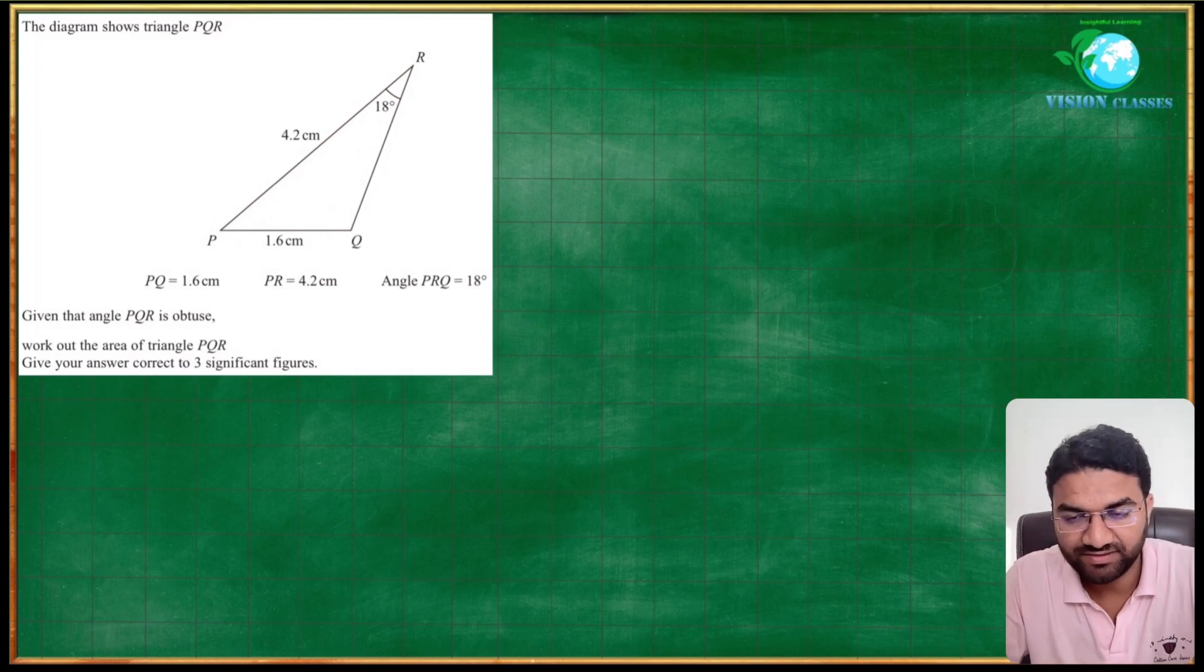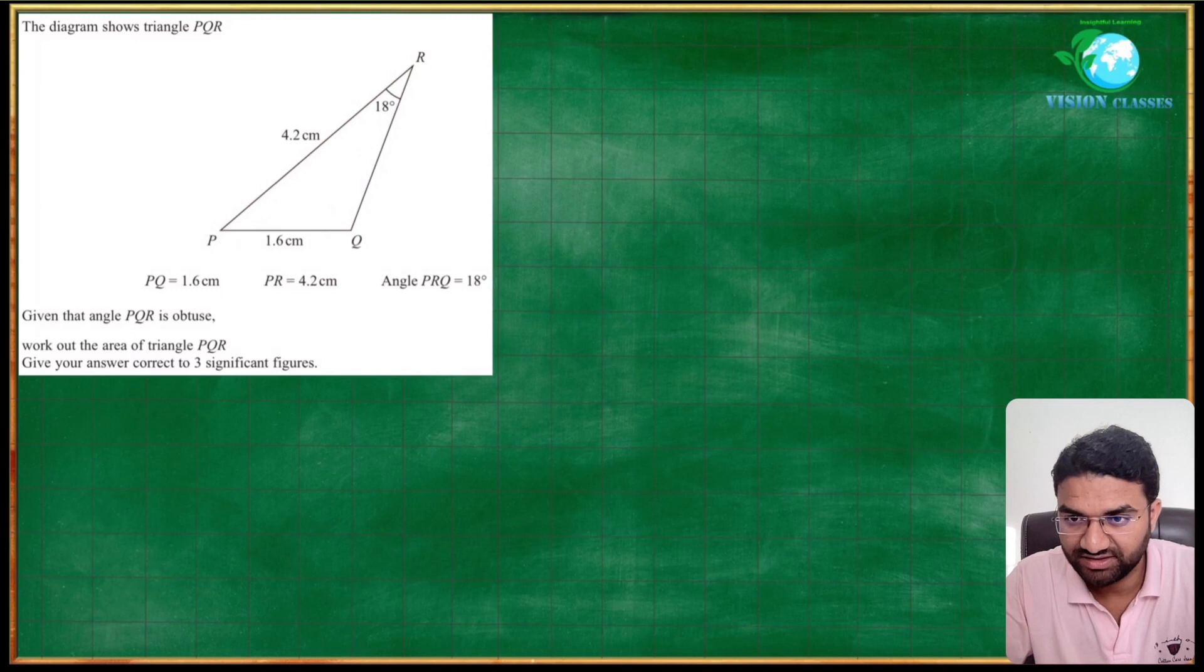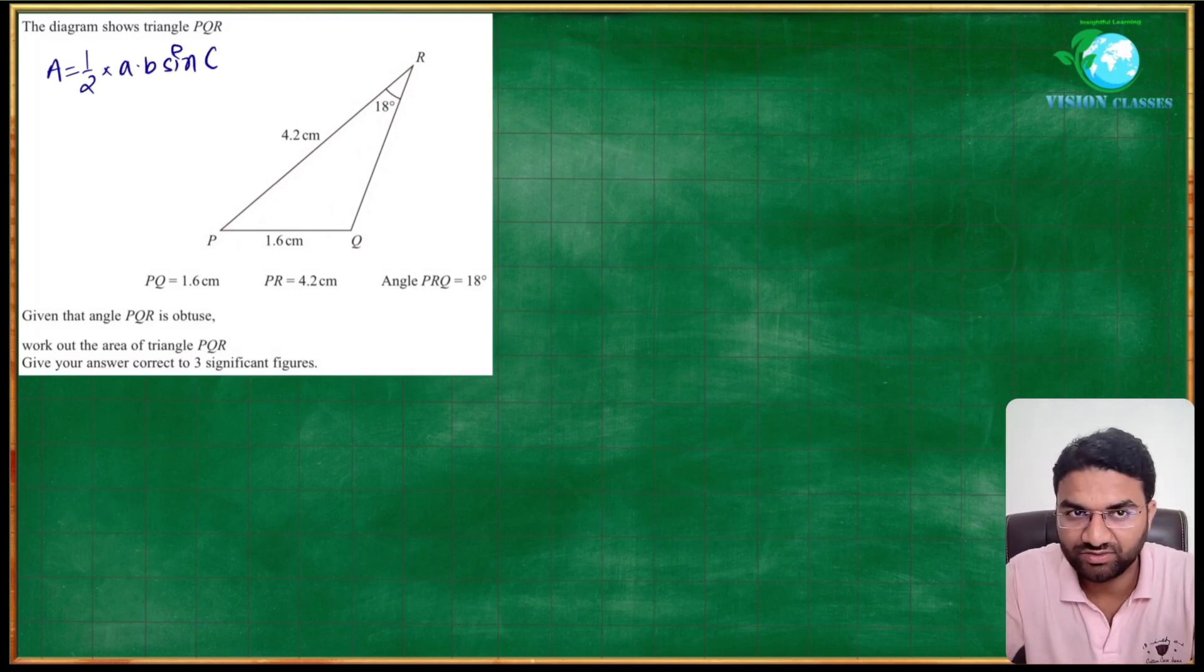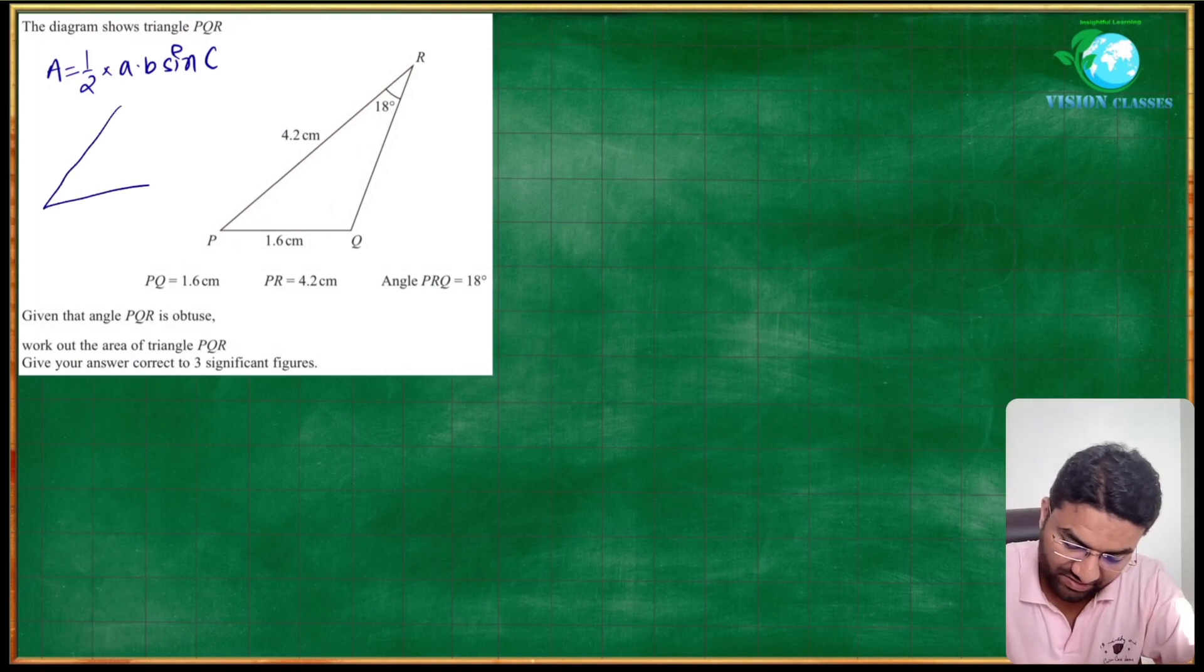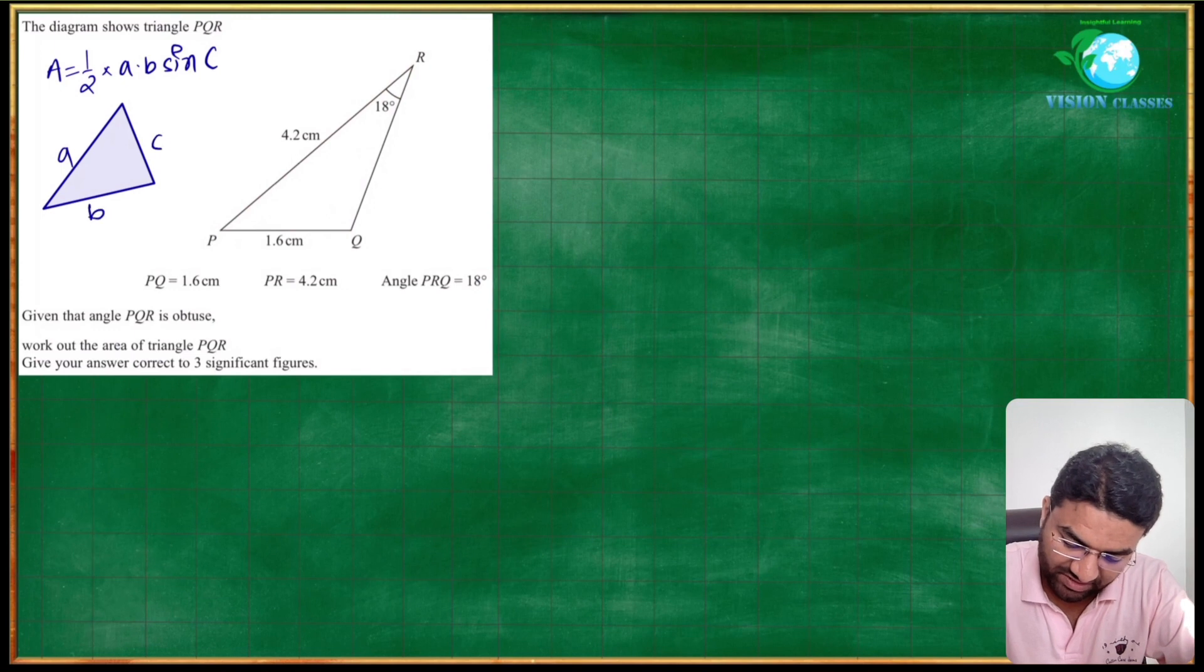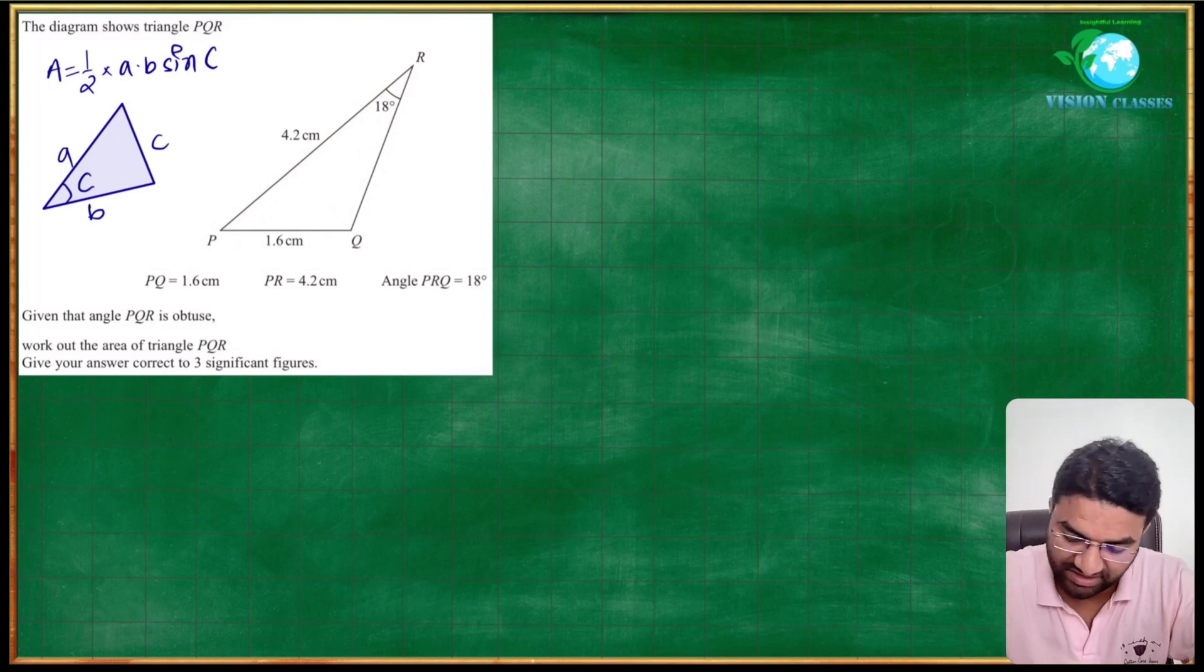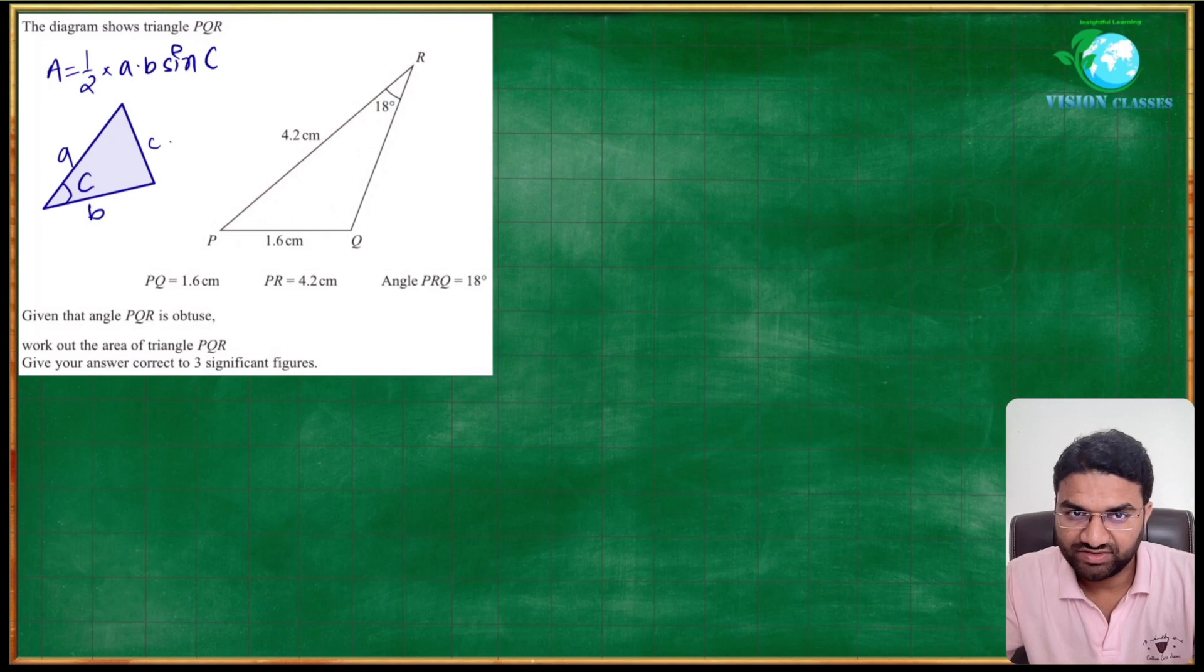But here we have to use the formula: area equals half times a times b times sine of angle between these two, which is C. This is just in short - this is a, this is b, this one is c, and this angle between a and b is capital C. These are small c for the side.